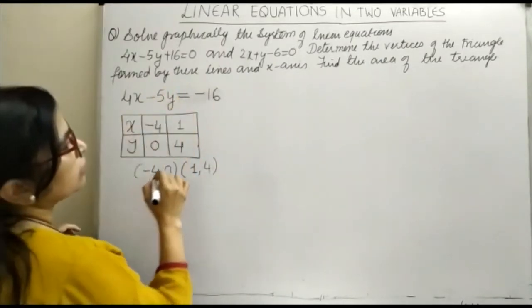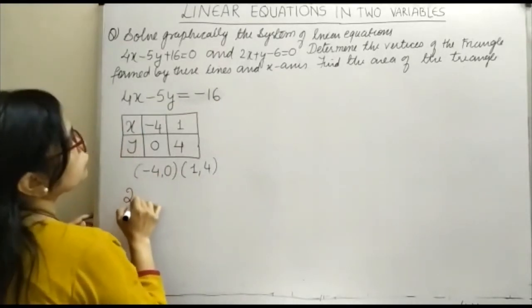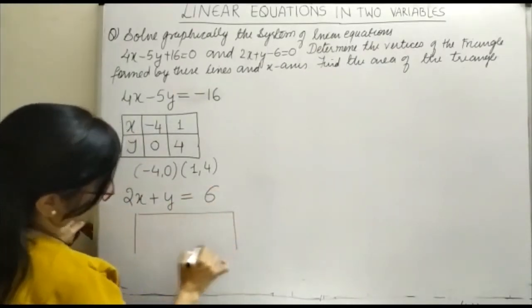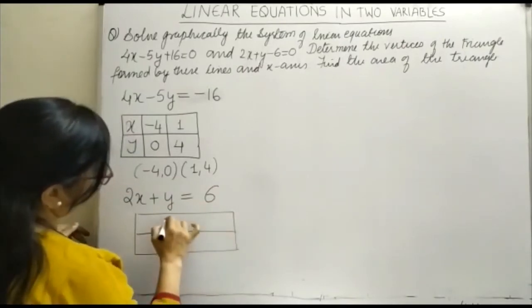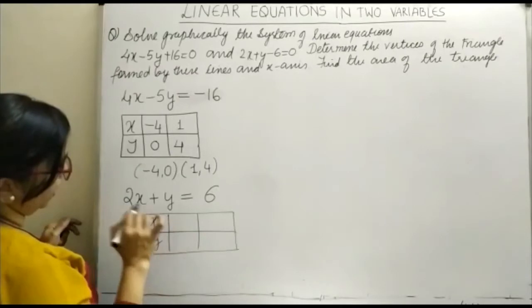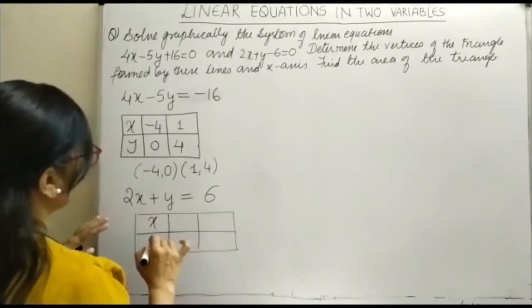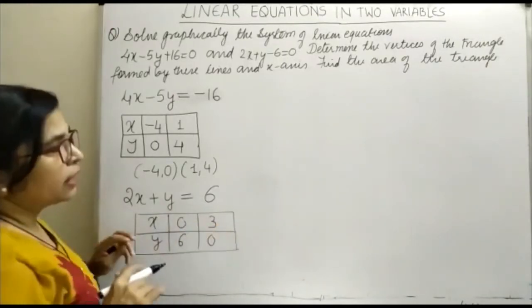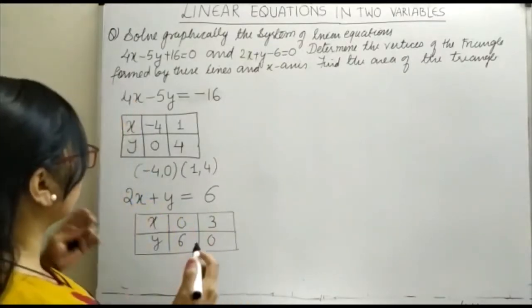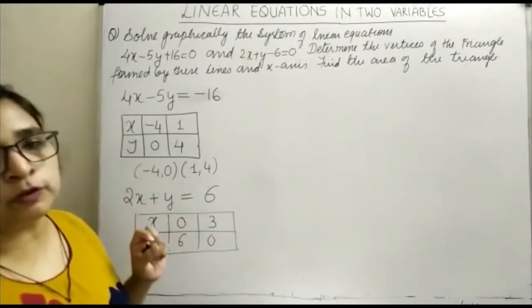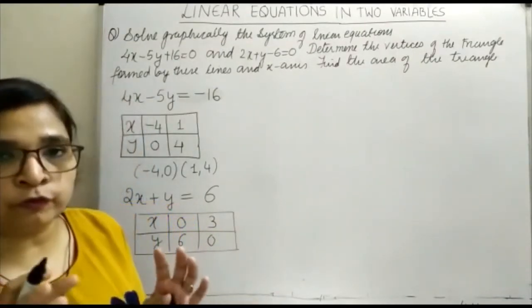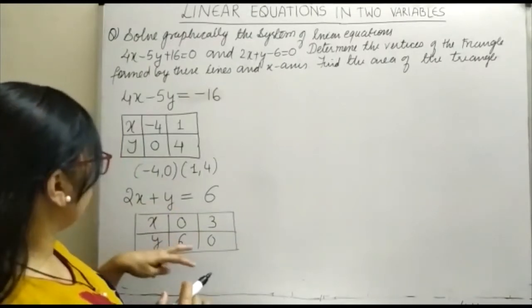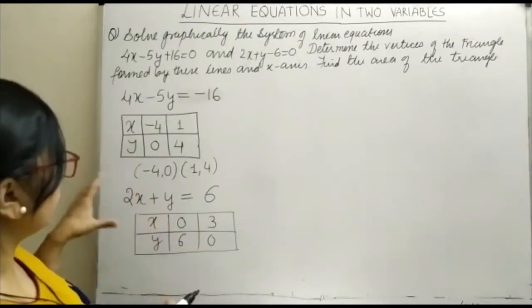Now our next equation is 2x plus y equals 6. We will do the same thing - make a table and find two values for x and y. It's very simple. Let me take x as 0, I will get y as 6. If I take y as 0, x equals 3. Taking 0 is very comfortable. If you find any other value, you can go with that. If there's any problem with 0 and you're not getting an integral value, then only you avoid it. Otherwise your first priority should be to use zeros.